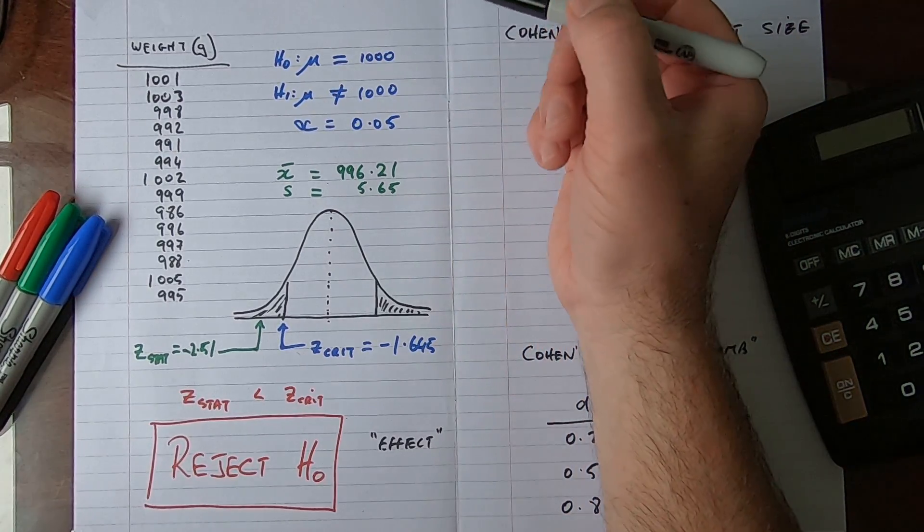So I'm looking to see with this sample is the manufacturing process in or out of control, in other words is it making bags of food at 1,000 grams or is there a difference. So let's set out a hypothesis. Our null hypothesis is that mu, the population mean, is equal to 1,000 grams. That's the weight that we want them to be. And our alternative hypothesis is that mu, the population mean, is not equal to 1,000 grams.